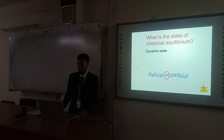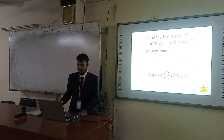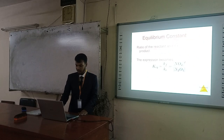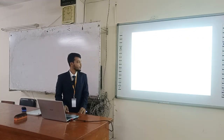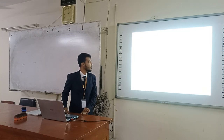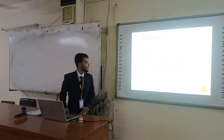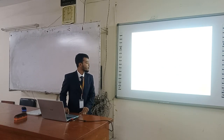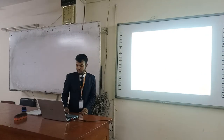What is the state of equilibrium? Equilibrium is a dynamic state. The equilibrium constant is the ratio of the reactant and the product, and it is denoted by K. Kf is the forward reaction constant and Kr is the backward reaction constant.